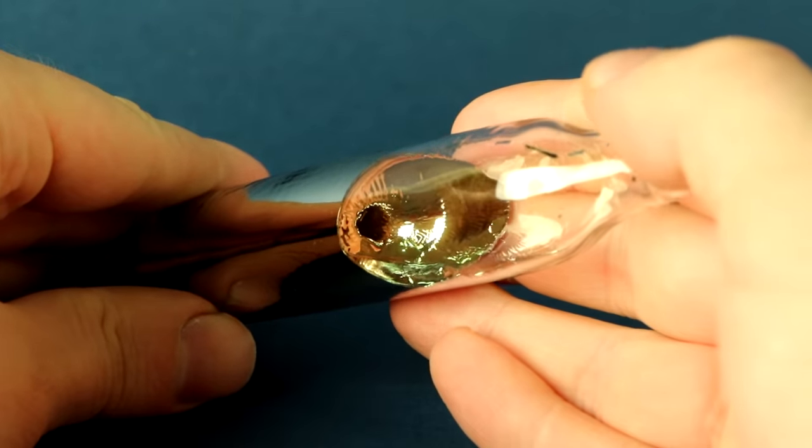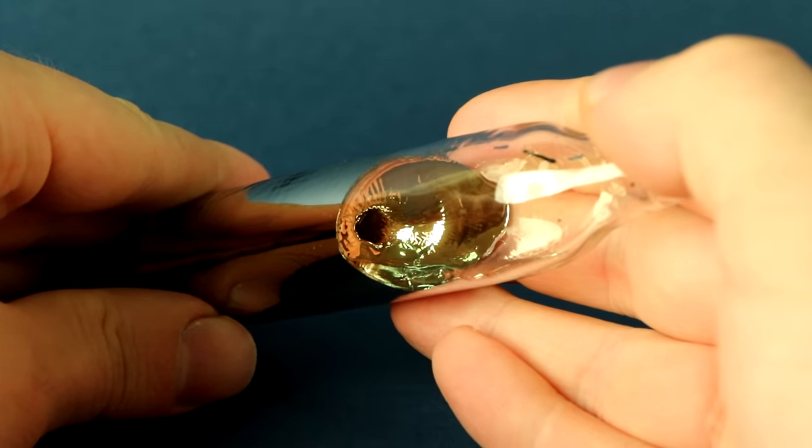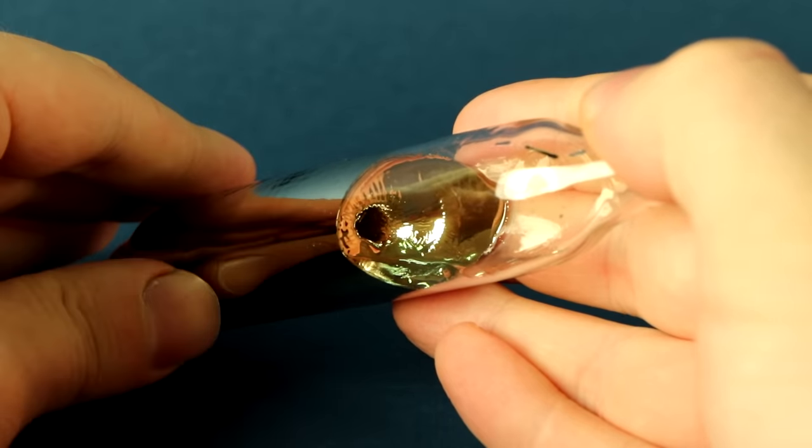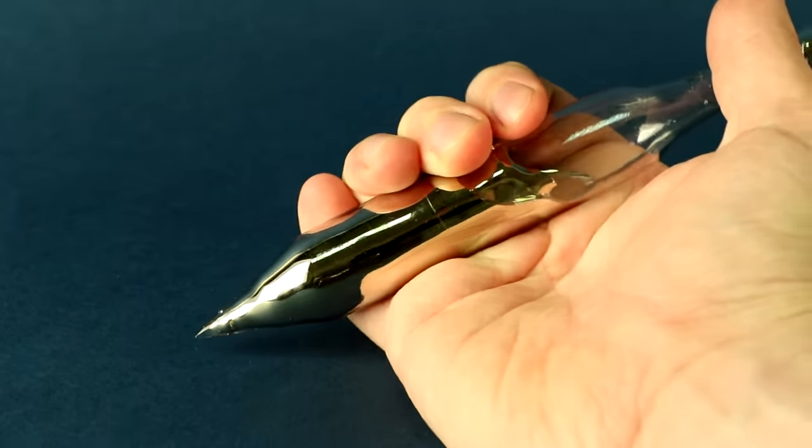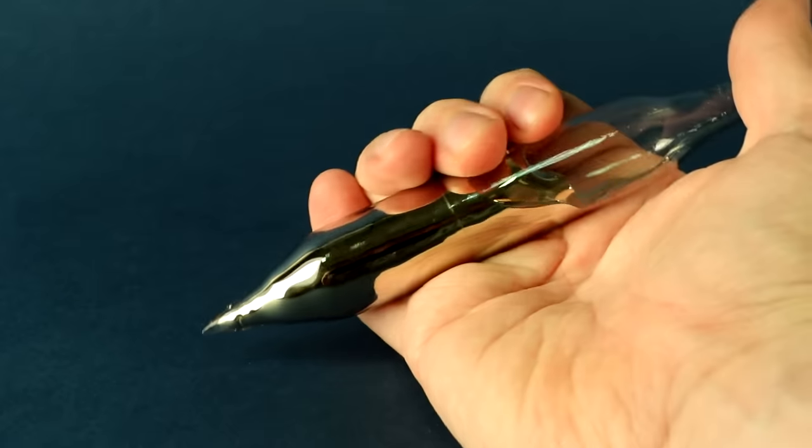Cesium is unusual in that it has a very low melting point – only 29 degrees Celsius. If you take the vial of cesium in hand, you can see how quickly the metal begins to melt.